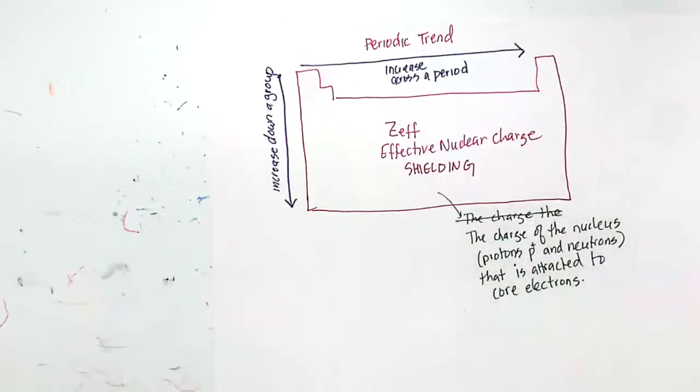So what does all of this mean? I will explain this, and then we'll finish this off on Tuesday. So this is the first of our three trends, effective nuclear charge: charge of the nucleus that is attracted to the core electrons.